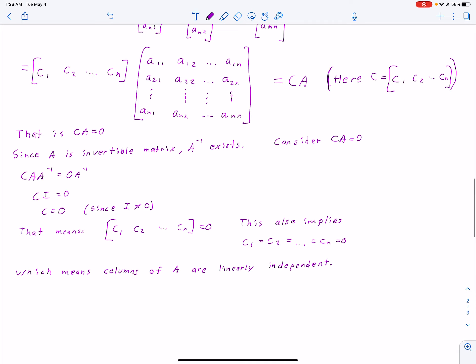And just a little bit more algebra to show a proof. This also implies that any C together just equals 0, and it also means columns of A are linearly independent.